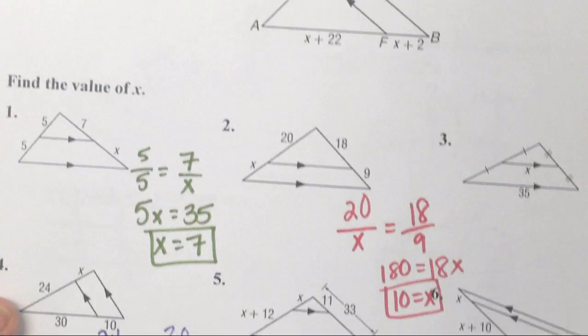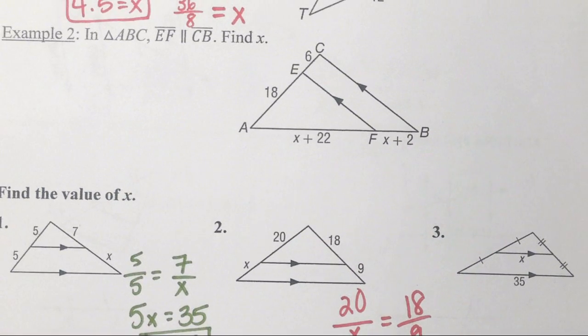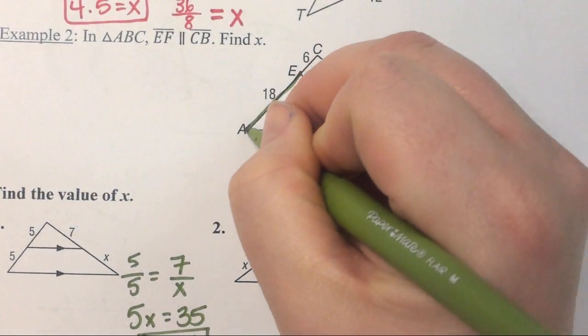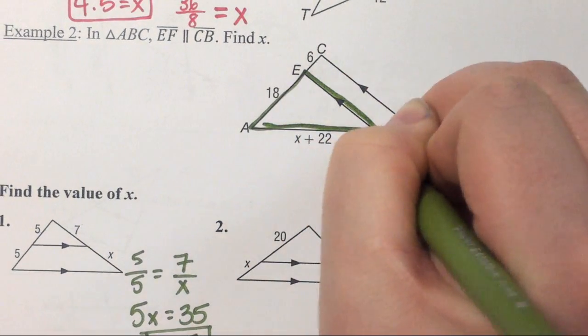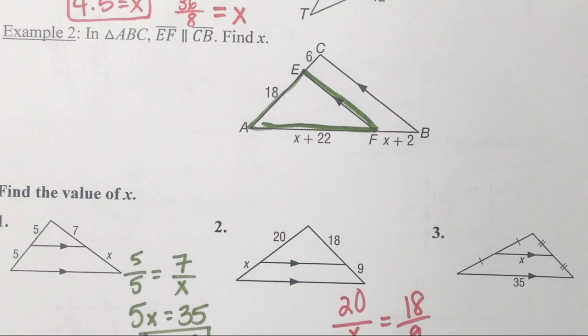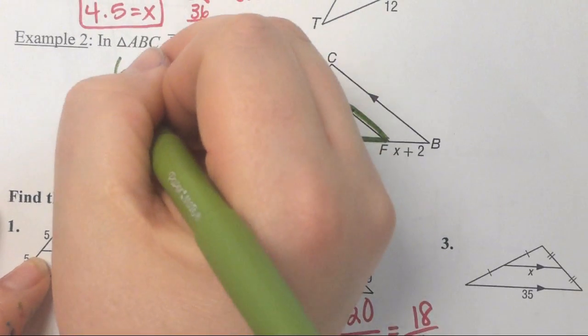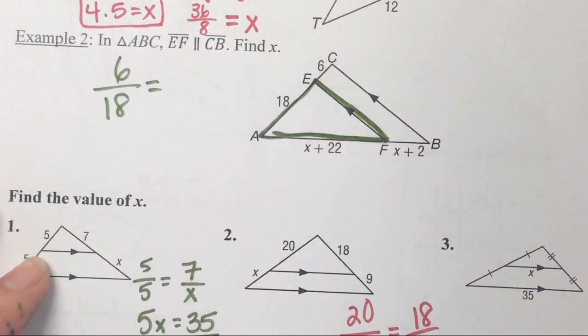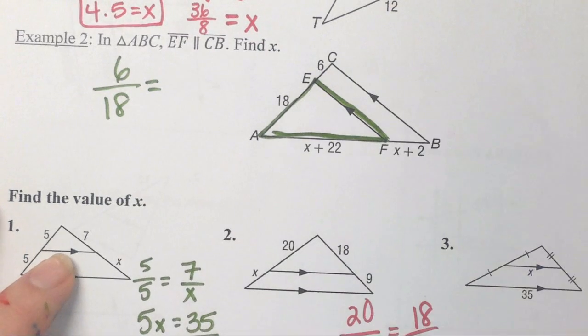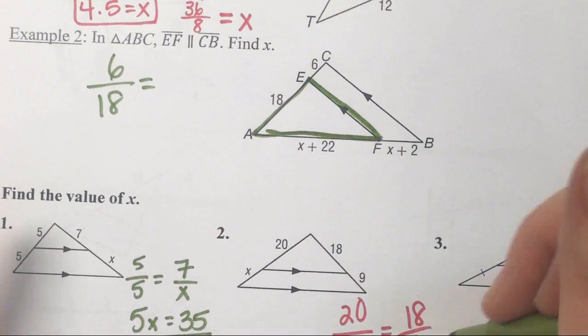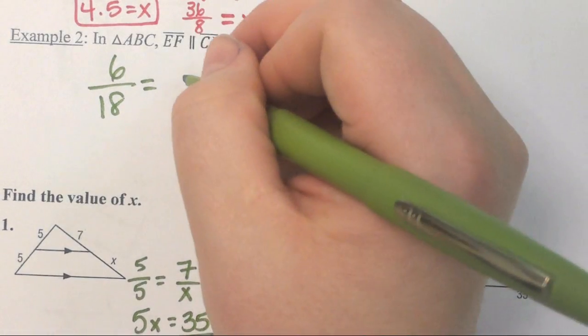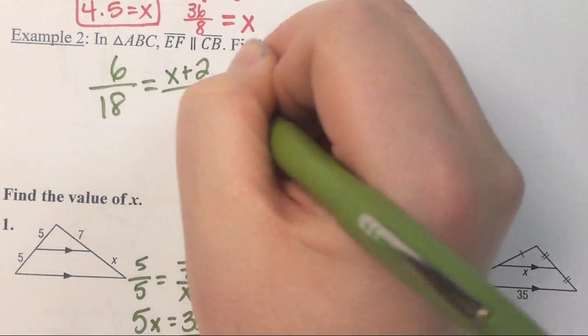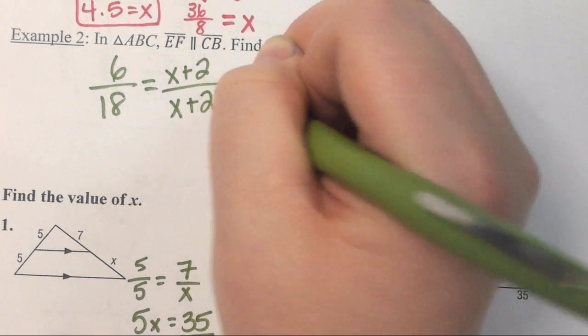Then we'll go back and be brave and try example 2. So Natalie was right, I am going to do, how did you want to do it Natalie? Did you want to do 6 over 18 or 18 over 6? I did 6 over 18. That's fine. So she did 6 over 18. So do I put x plus 22 in the numerator or x plus 2 in the numerator? I put x plus 2.